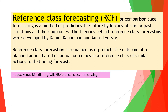Reference class forecasting is a method for us to predict the future by looking at past situations and their outcomes. Daniel Kahneman and Dr. Amos Tversky got the Nobel prize for figuring this out and setting up the theory behind it. It predicts the outcome of a planned action based on a class of journeys that have been done before.